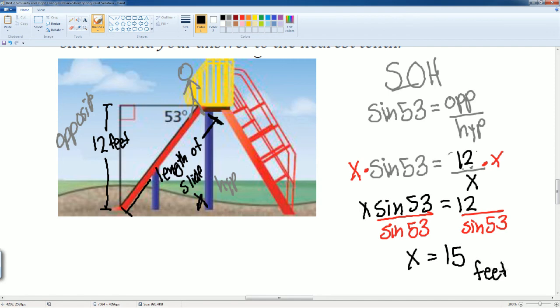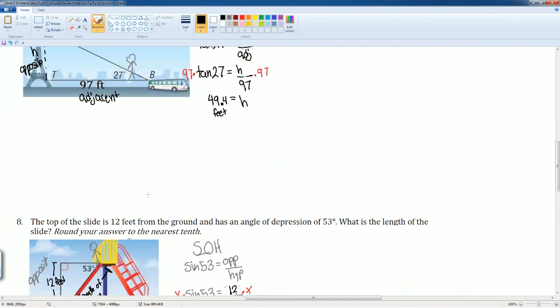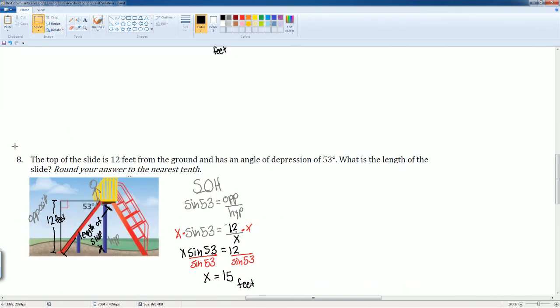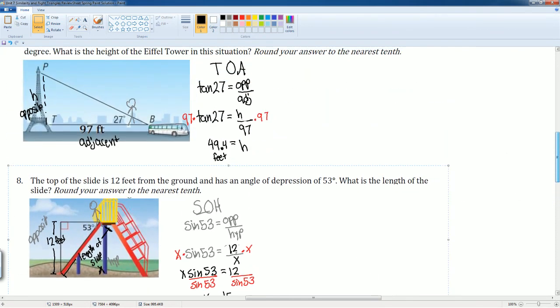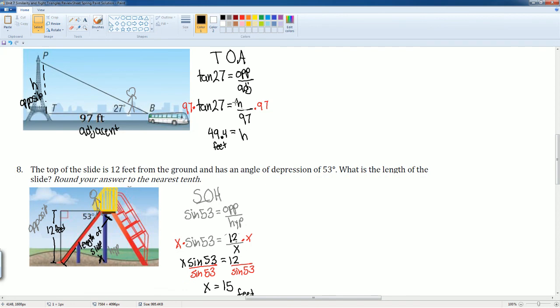All right, there you go. So if you notice, in these two problems, 7 and 8, all we did here was try to find the sides of this right triangle in this word problem, and we just end up using the regular trig ratios.